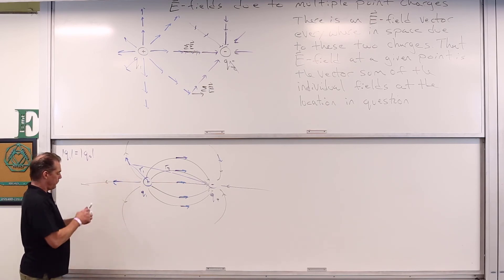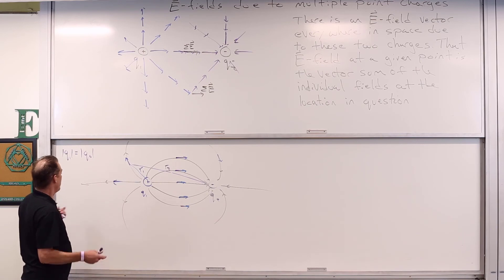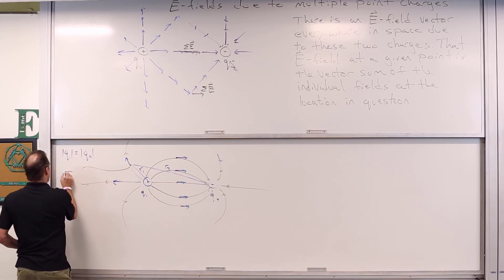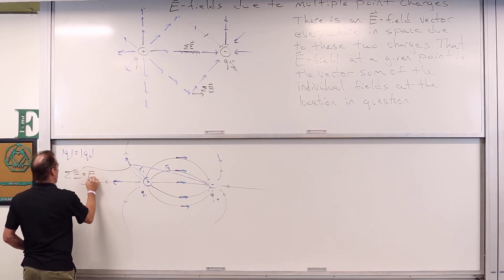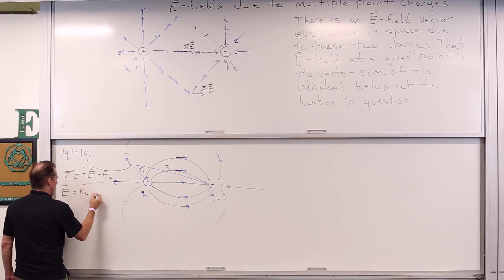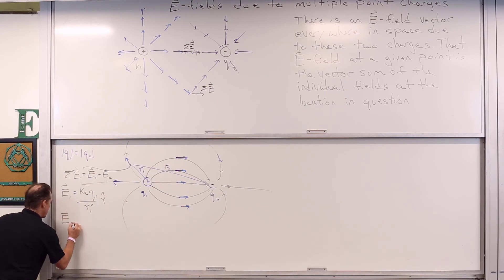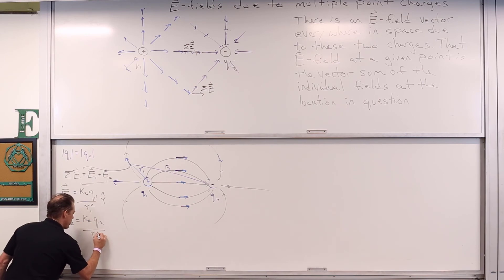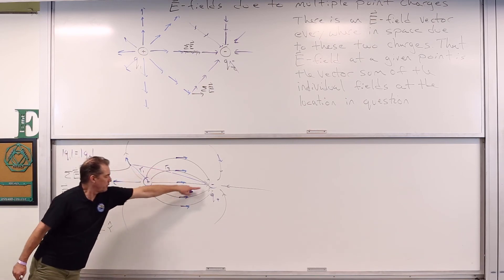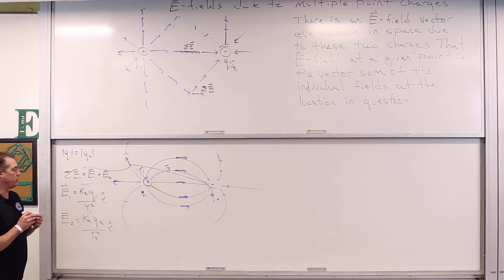That's it. So we have: Σ E = E₁ + E₂, where E₁ = k_e · Q₁ / r₁² · r̂ and E₂ = k_e · Q₂ / r₂² · r̂. This one is radially inward towards Q2, and this one is radially outward away from Q1. They add together and produce a field of a certain magnitude and a certain direction.